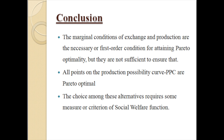All points on the Production Possibility Curve (PPC) are Pareto optimal. However, the choice among these alternative points on the PPC requires some measure or criteria of a social welfare function. The task of measuring social welfare or discussing social welfare functions is needed to fulfill the second-order condition of Pareto optimality, where maximization of social welfare becomes possible. We will discuss social welfare functions to address the shortcomings of Pareto optimality in the next class.